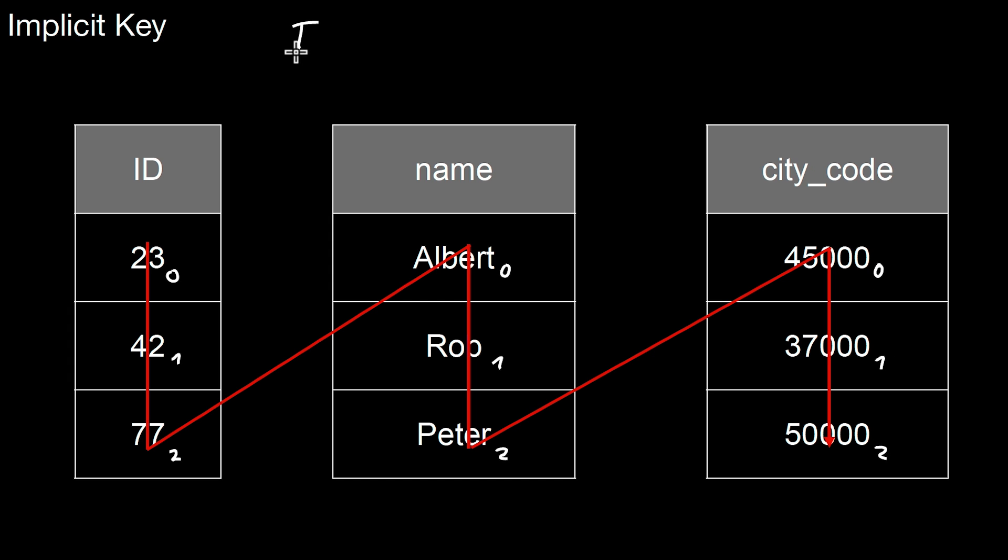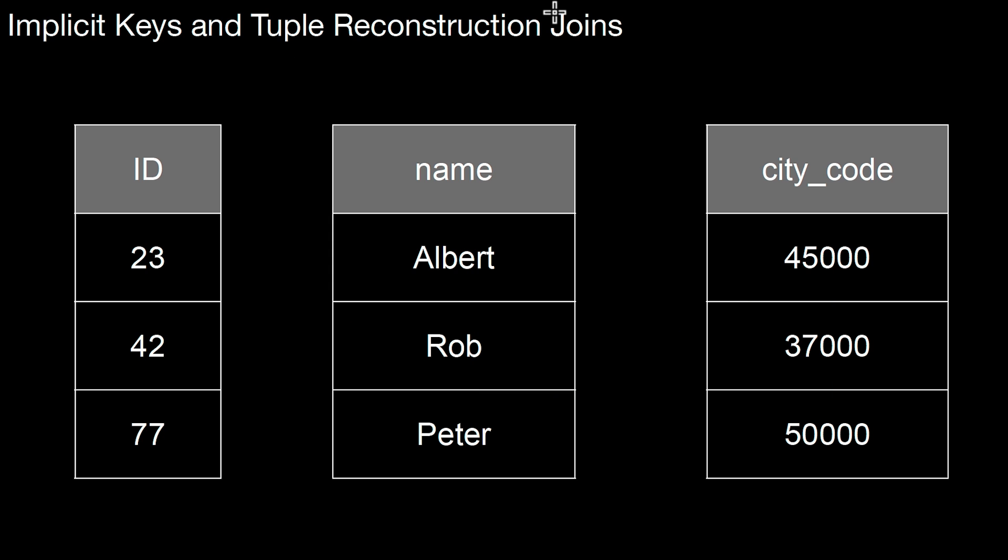If you have an array named ID, and then you put in the index, whatever value you're interested in, be it zero, one, or two, you put it here and then you get that value, or you obtain, or you write that value. So for implicit keys, using arrays is a good option, and it has other advantages, especially for so-called tuple reconstruction joins.